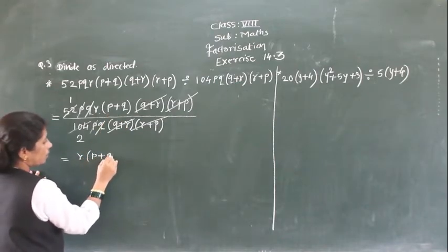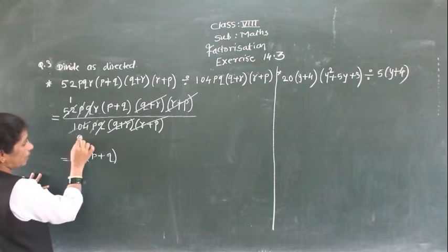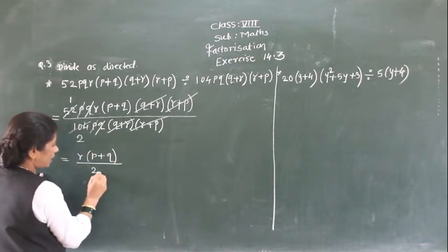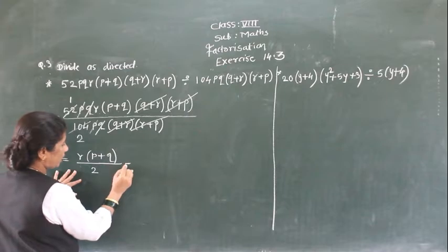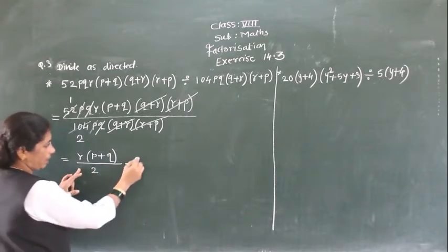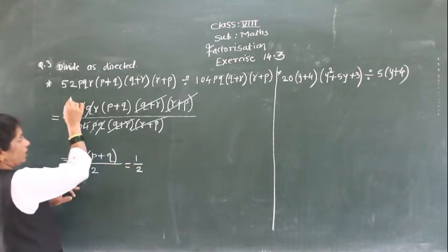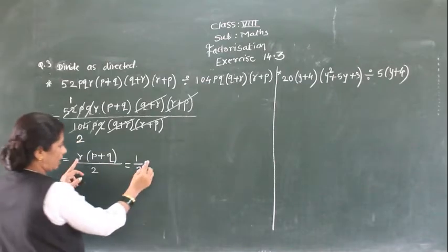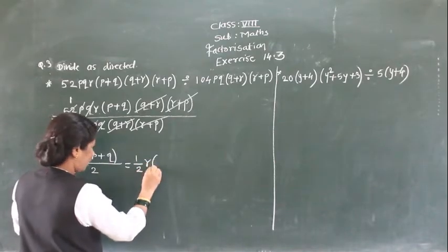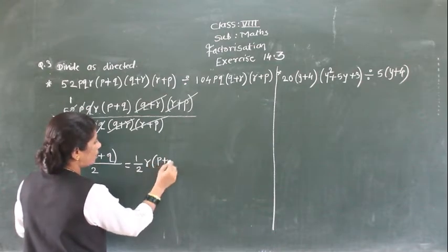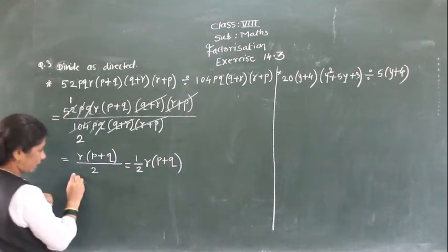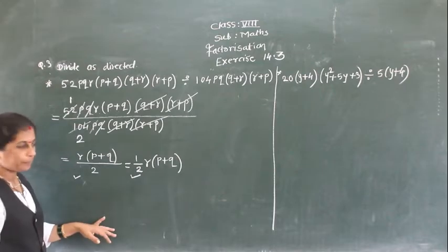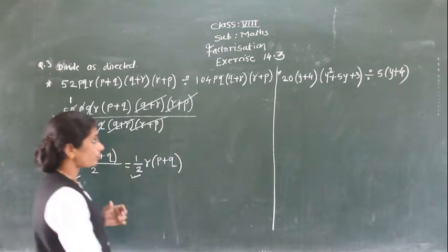So the result is (p+2)/2, because from the denominator everything gets cancelled. So you can write this as 1/2 × r(p+2). The numbers we have taken over here: 1/2 × r(p+2). You can write it either way — the same answer.